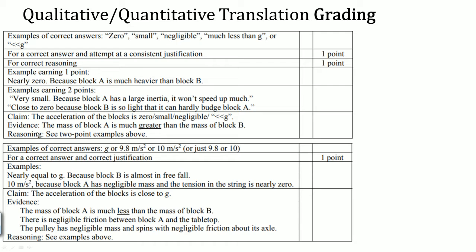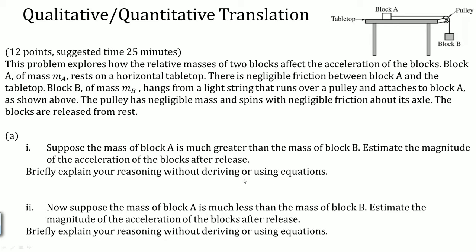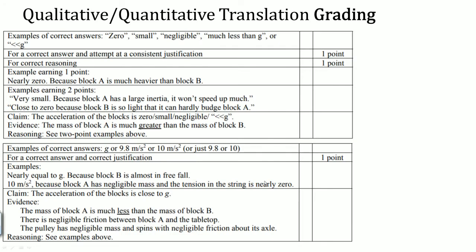This also gives an example of what a claim, evidence, and reasoning response looks like. The claim can be that the acceleration of the block is zero, small, or negligible — that gets you the first point. The second point is for the evidence that the mass of block A is much greater than the mass of block B. No calculation is required because the problem says without deriving an equation.